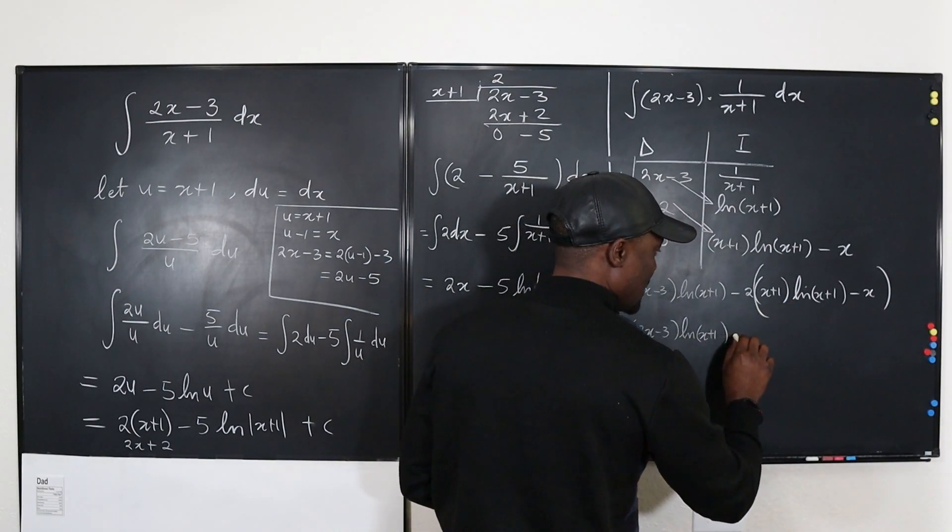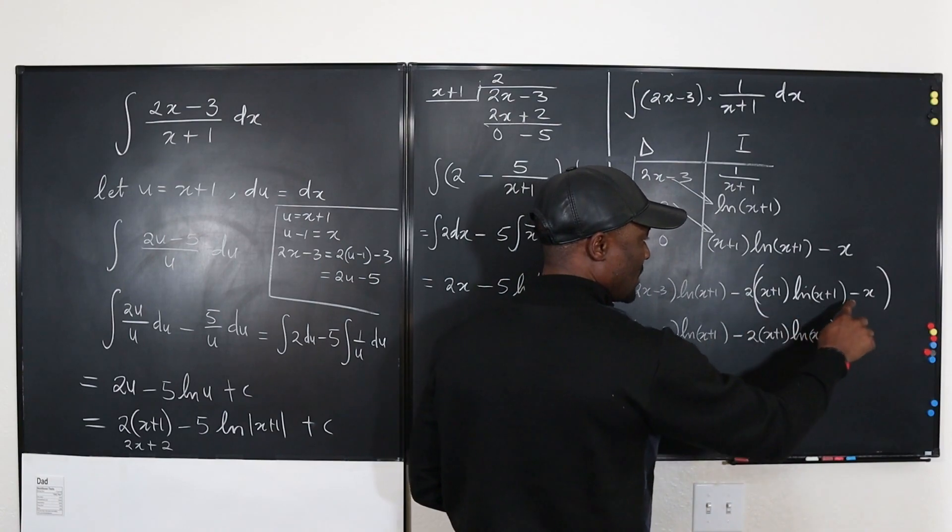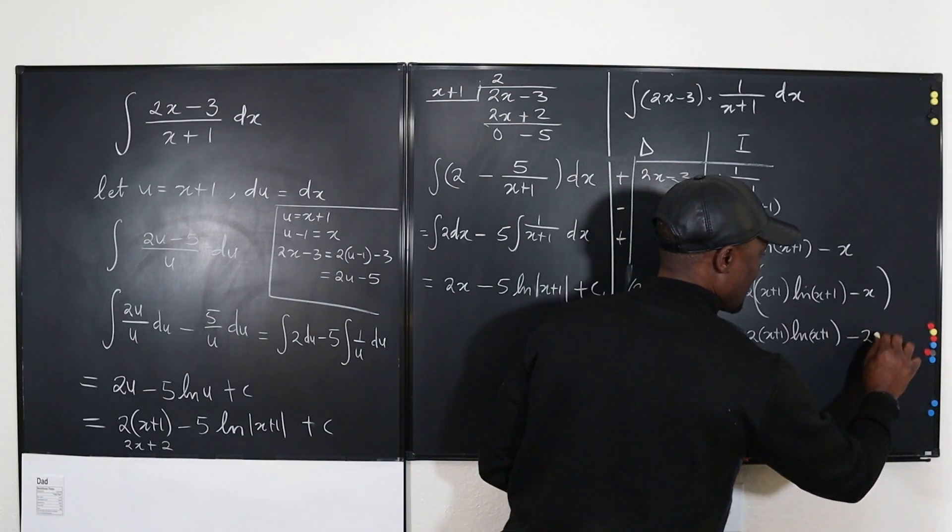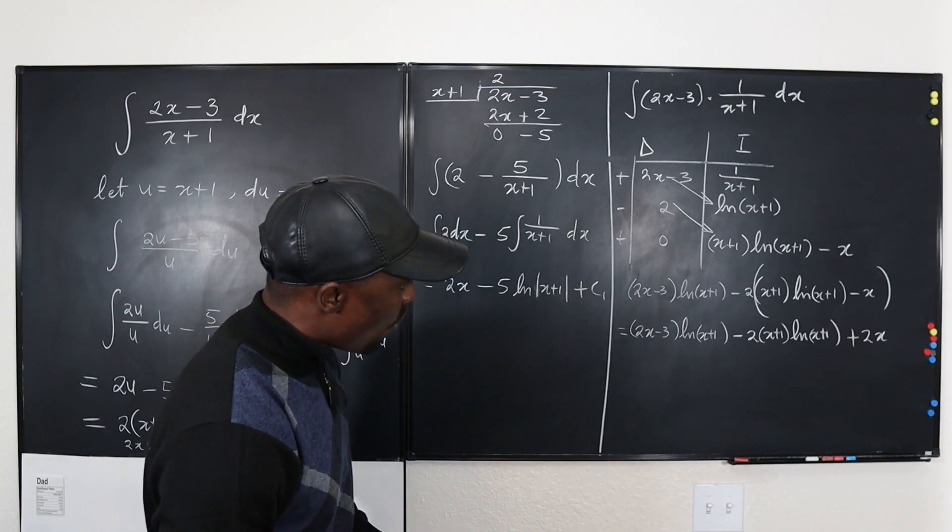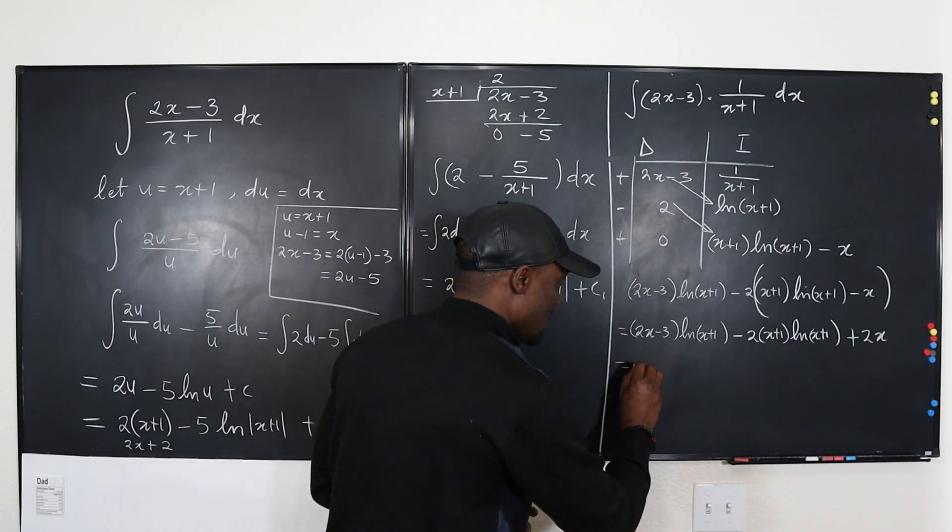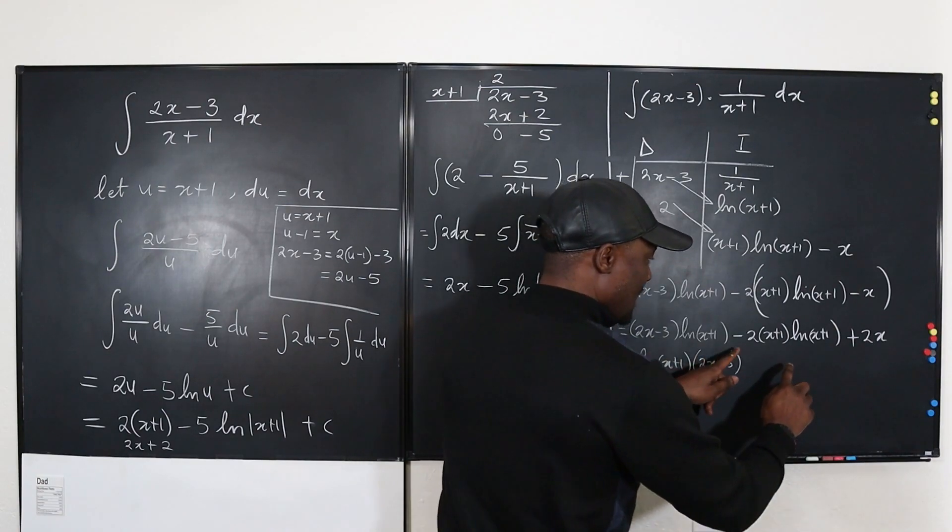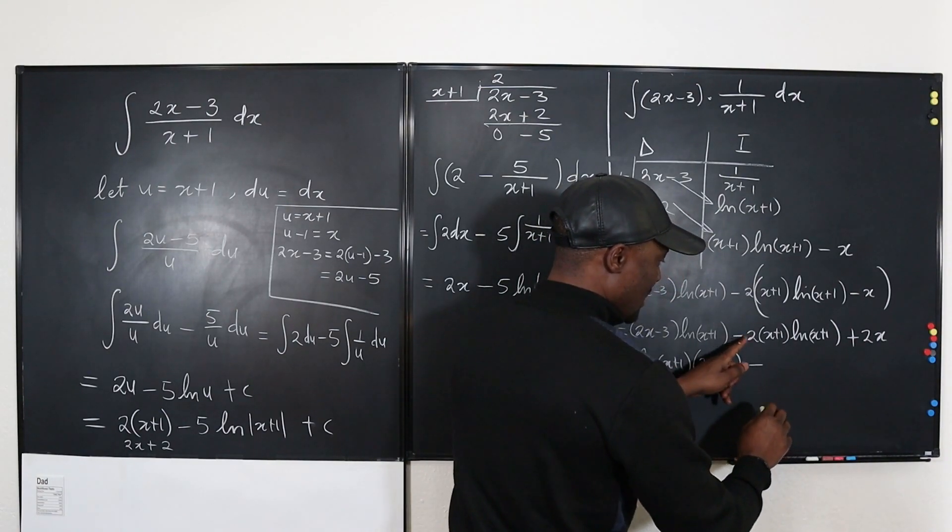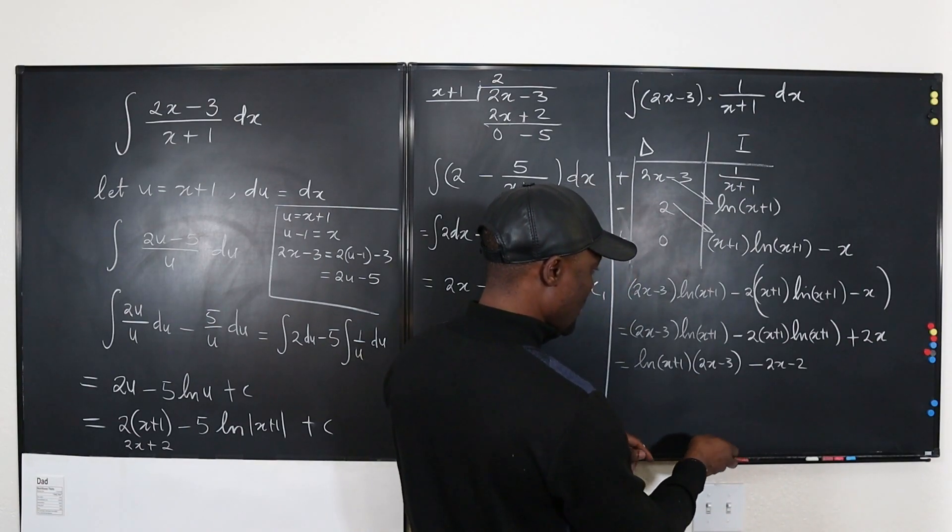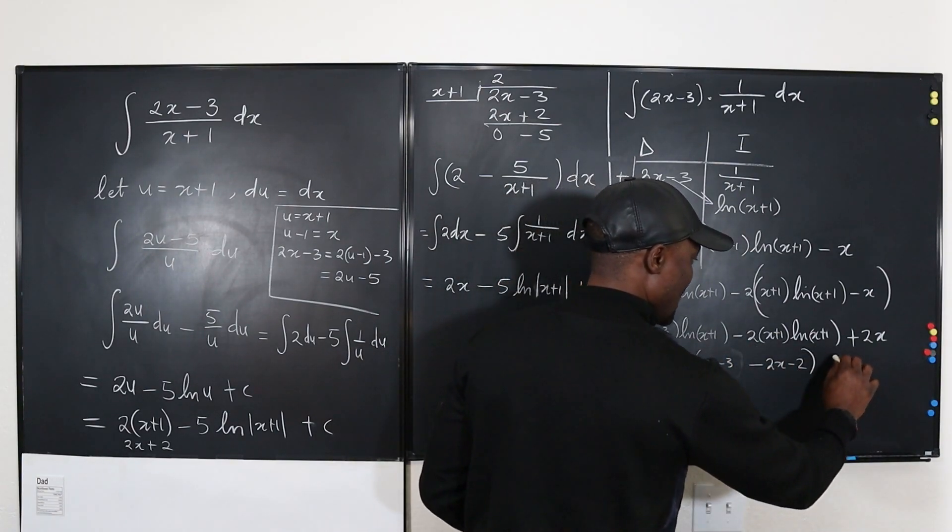All of this together like this. This minus 2 is multiplying all of this. So let's simplify. This is going to be equal to 2X minus 3 times the natural log of X plus 1. Now let's distribute this 2. It's going to be minus 2 times X plus 1, natural log of X plus 1, and minus 2 times this is going to be plus 2X. Now what is coming? I think I see natural log of X plus 1 is here. It's also here. So I'm going to take it out. So this is the natural log of X plus 1, and then I'm going to write 2X minus 3, and here I'm going to have minus 2X minus 2. And then on the outside I have plus 2X.